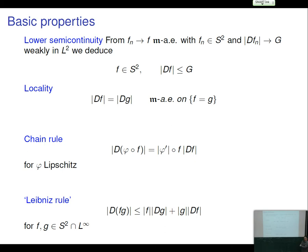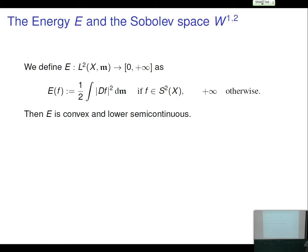We also have a strong locality property: if two functions agree on a Borel set, then their minimal weak upper gradients agree on that same Borel set — even if it is not open. We also have a chain rule and a Leibniz rule in the best possible form. With the minimal weak upper gradient in hand, we define the Dirichlet energy: for a Sobolev function, E(f) = ½ ∫|Df|² dm, and +∞ otherwise.